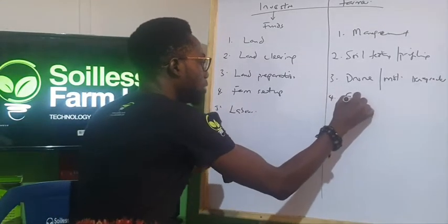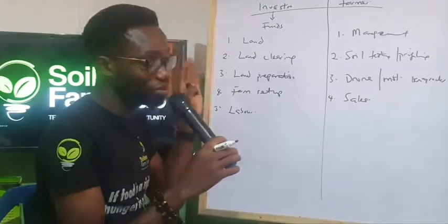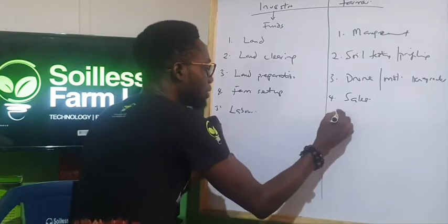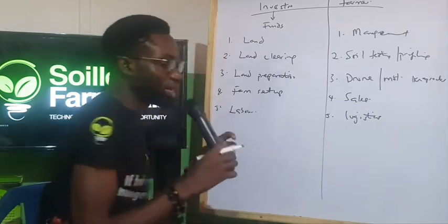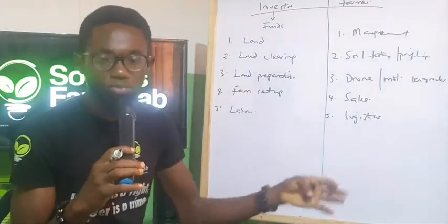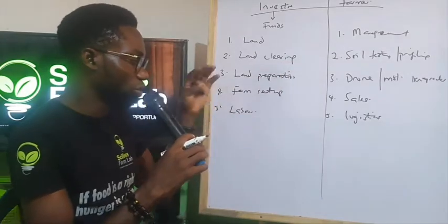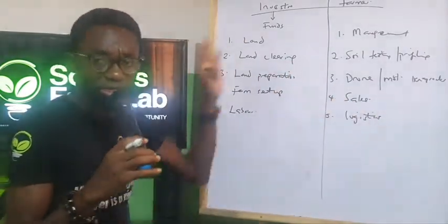Then number four is sales. We are responsible for the sales of all the produce that will come from the farm. Then number five, logistics, movement of the produce from the farm to where it is needed. All of that is on us. So these are our different roles.